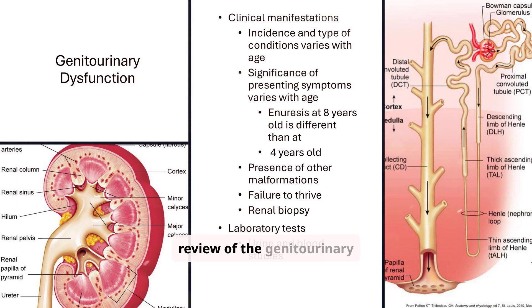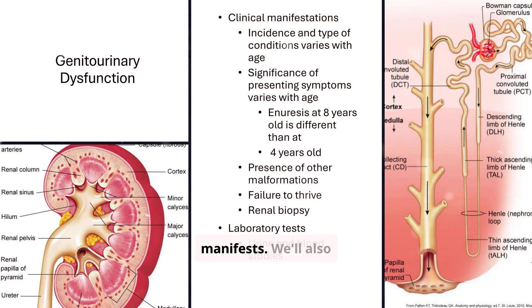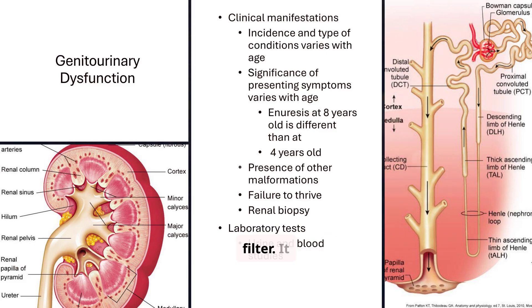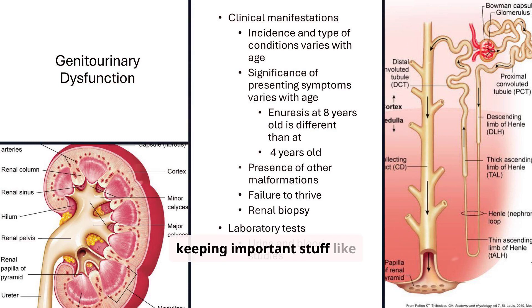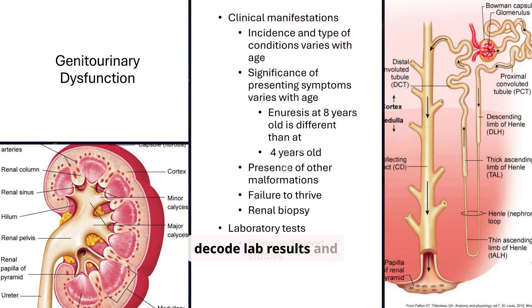Let's begin with a review of the genitourinary system's anatomy and physiology. Understanding the structure of the kidney, including the nephron, is crucial for grasping how dysfunction manifests. We'll also touch on key clinical manifestations and relevant lab tests. Picture the nephron as a coffee filter — it filters blood to make urine while keeping important stuff like protein and glucose in the bloodstream. When this filter breaks, protein shows up in urine, swelling begins, and we have a problem.